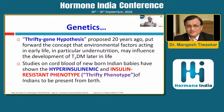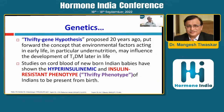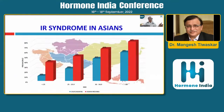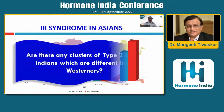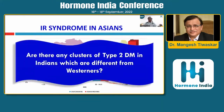We have therefore shifted from the hyperinsulinemic thrifty gene hypothesis to recognizing Indians as having an insulin-resistant phenotype. Indians are labeled as having very high insulin resistance syndrome — which is not completely untrue. But then, what about young Indians? Are there distinct clusters of type 2 diabetes in the Indian population that are different from those seen in Westerners?